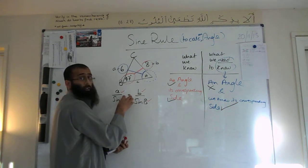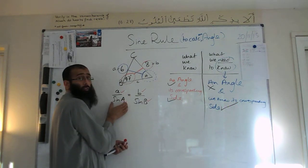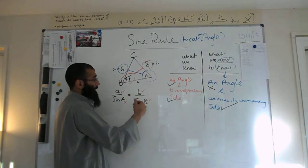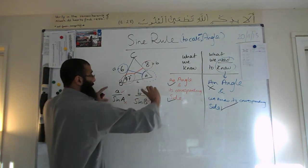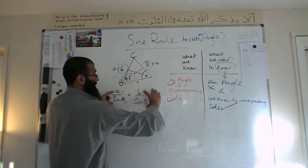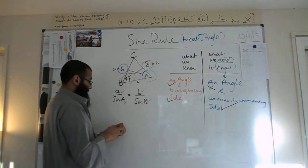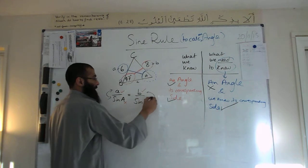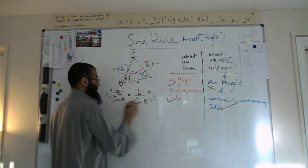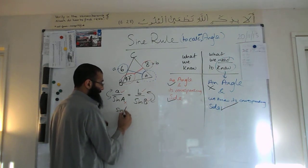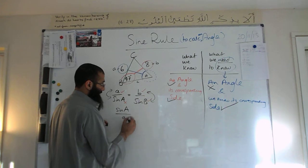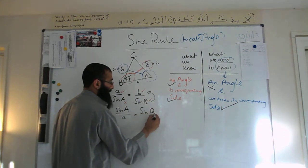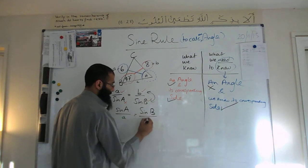We need to work out A. At the moment, A is at the bottom of the fraction, so we need to get it to the top in order to work with it. What we're going to do is flip these two fractions upside down. So we get: sine A over little a is equal to sine of big B over little b.